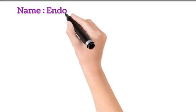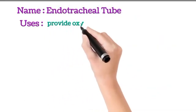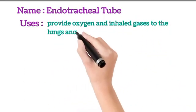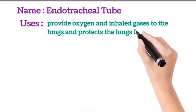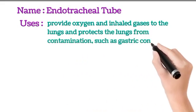Name: Endotracheal tube. Uses: It is used to provide oxygen and inhaled gases to the lungs, and protects the lungs from contamination such as gastric contents or blood.